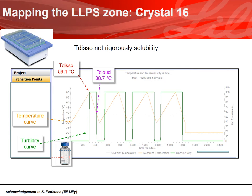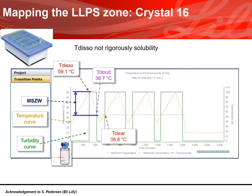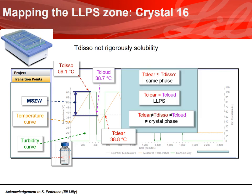During cooling, we measure a cloud point. The difference in temperature between the solubility and cloud point corresponds to the metastable zone width. At the cloud point, two different events can happen: either primary nucleation of crystals or formation of oil droplets. To discriminate between these events, we perform a second heating ramp and measure a clear point. If the clear point is similar to the temperature of solution, then the cloud point corresponds to primary nucleation of the same crystalline phase.